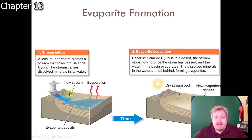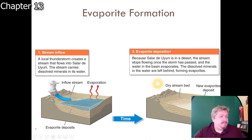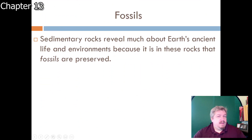In deserts, shallow salty lakes form each spring as mountain snow melts and flows down, then evaporates, leaving a mineral layer. The next spring another lake forms and evaporates, leaving another layer. Year after year you build up layer upon layer of different minerals from evaporation. If these layers get buried deep enough over time, that's how you get evaporite deposits underground.